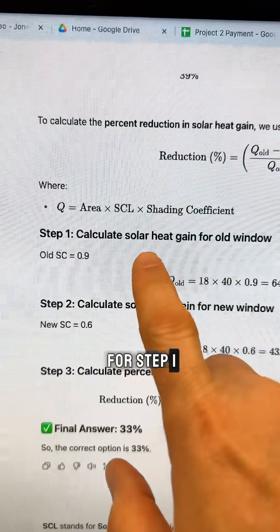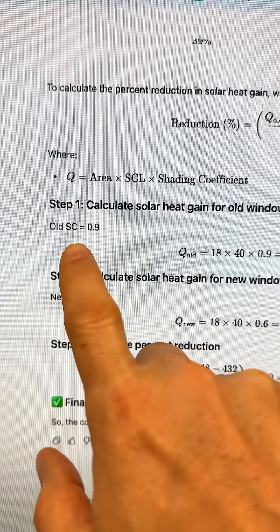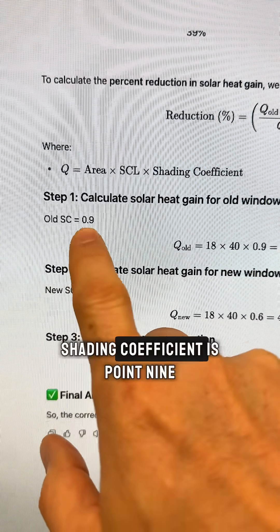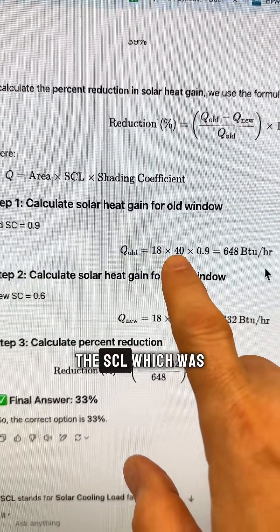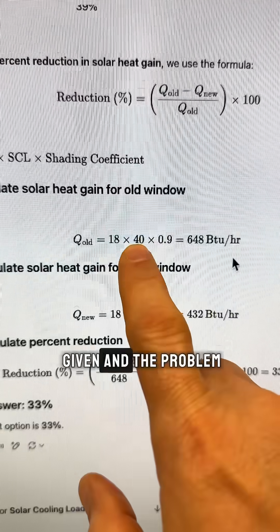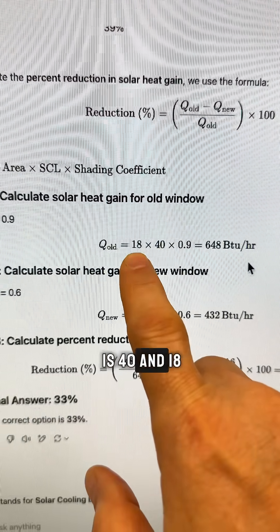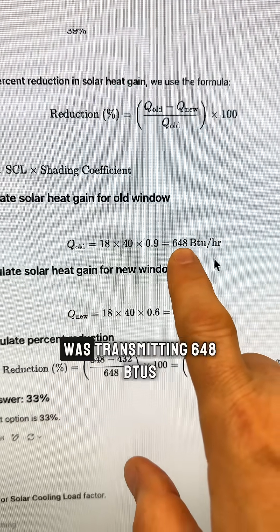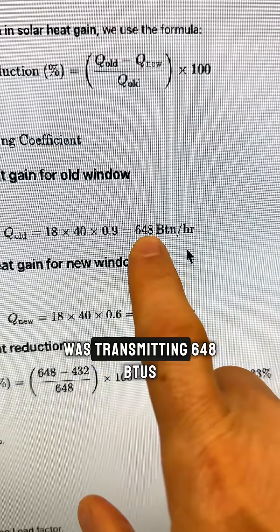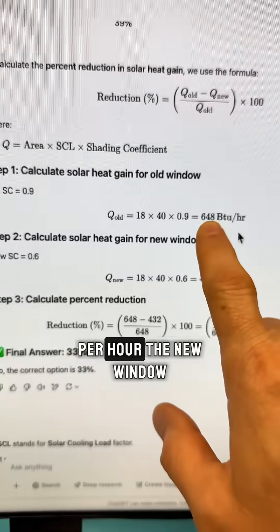So for step one, let's calculate the solar heat gain for the old window. We know the shading coefficient is 0.9, which is right here. The SCL, which was given in the problem, is 40, and 18 square feet. So the old window was transmitting 648 BTUs per hour.